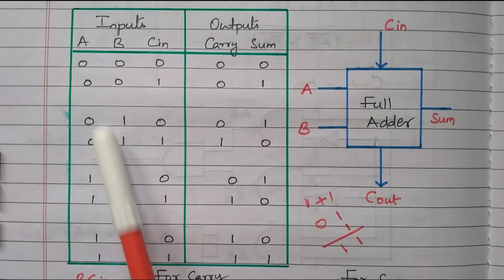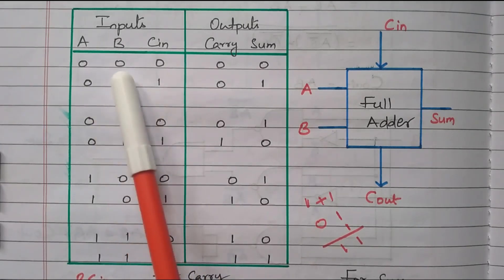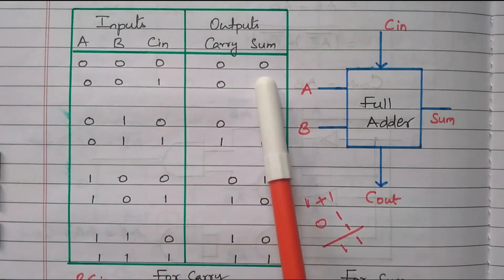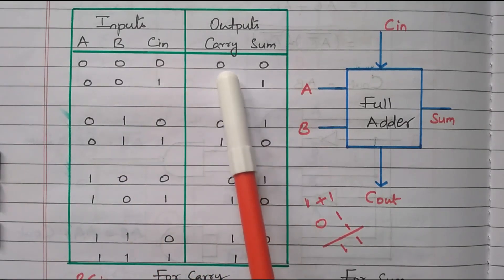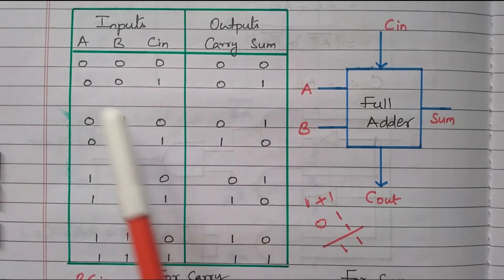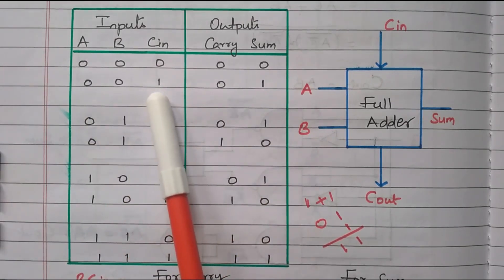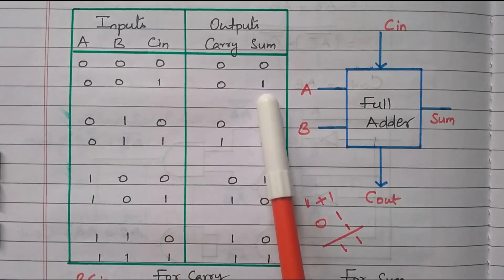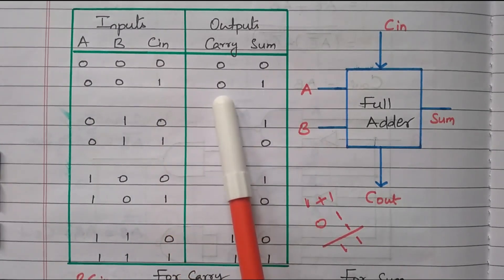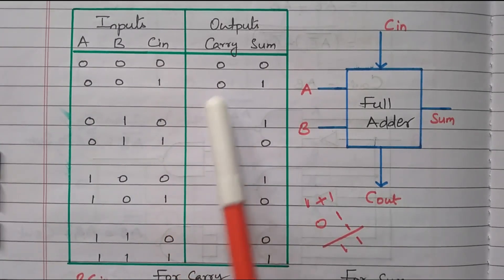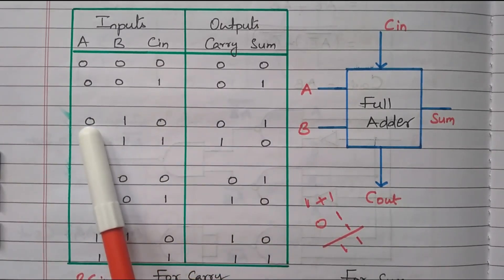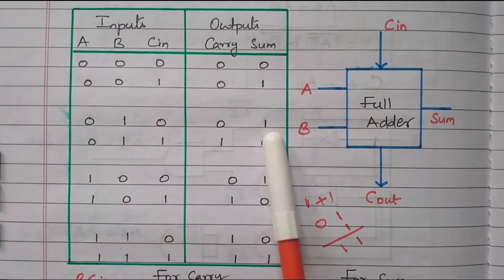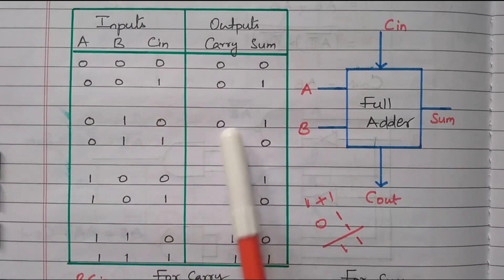When all inputs are 0, sum is 0 and carry is 0. When A=0, B=0, Cin=1, only one 1 is available, so sum is 1 and carry is 0. Similarly, when A=0, B=1, Cin=0, sum is 1 and carry is 0.